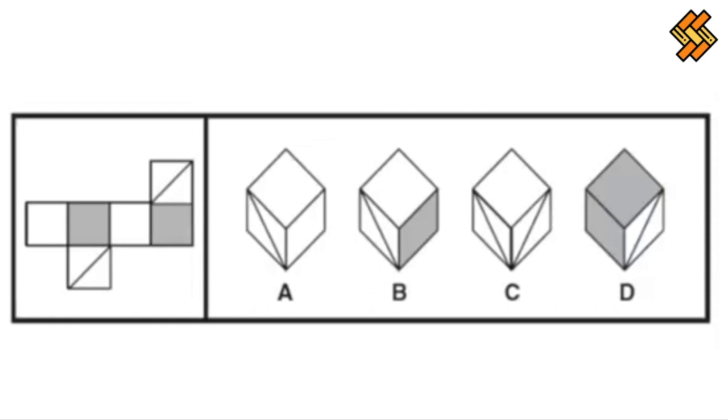So now let's go back to the problem. We already ruled out A and D. So let's use the side pairing method to figure out between B and C. Looking at C, we can see that these two sides with the diagonal lines cannot be next to each other because they are on opposite sides of the cube and cannot wrap around to the other side. So C cannot be the correct answer either. The correct answer must be B.